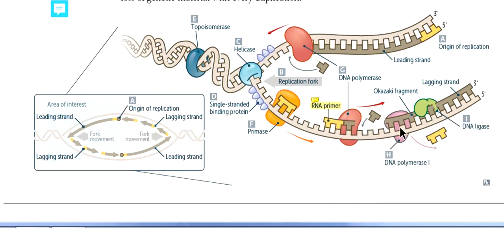In the Okazaki fragment, you can see the primers synthesizing the new RNA primer, and there is DNA polymerase which is adding nucleotides to the lagging strand. The lagging strand has multiple fragments that are separated from each other — these fragments are called Okazaki fragments. So the leading strand is the continuous strand and the lagging strand is the discontinuous strand.